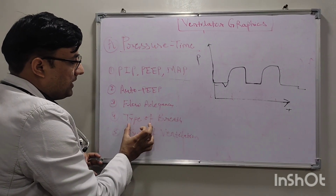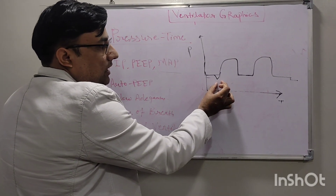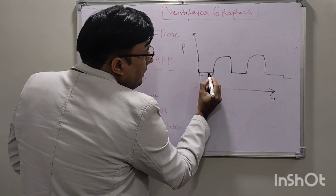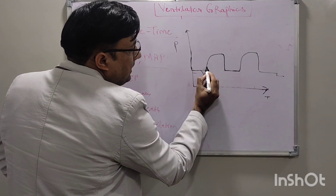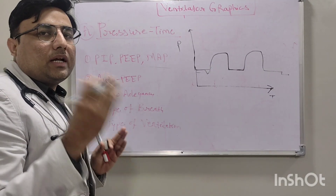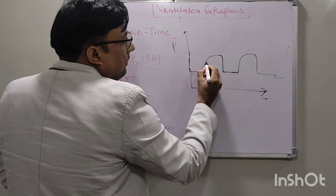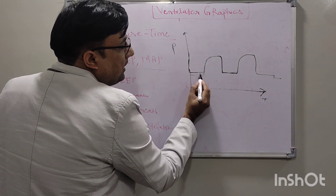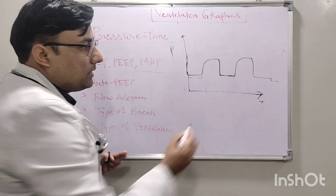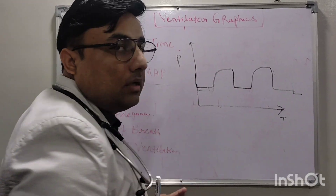In the pressure-time curve, we can also see the type of breath — whether it is a triggered breath or a mandatory breath. If the breath is triggered by the baby, there will be a negative deflection at the start of inspiration, because the baby's inspiratory effort generates negative pressure before the ventilator delivers the positive breath. If there is a negative deflection before the positive breath, it is a triggered breath. If there is no negative deflection, it is a mandatory breath delivered by the ventilator.